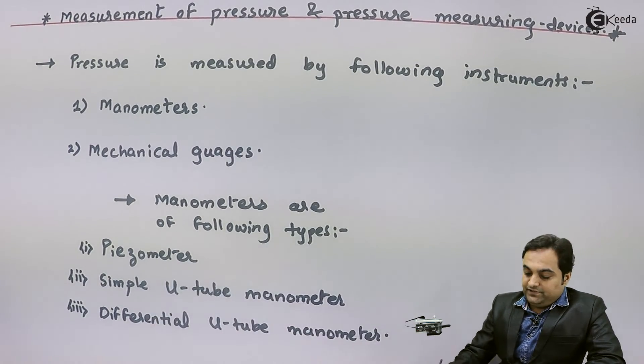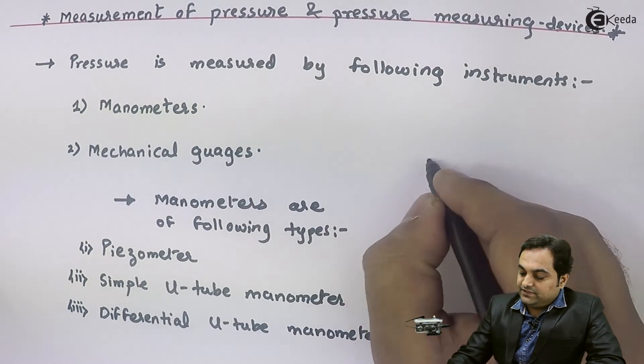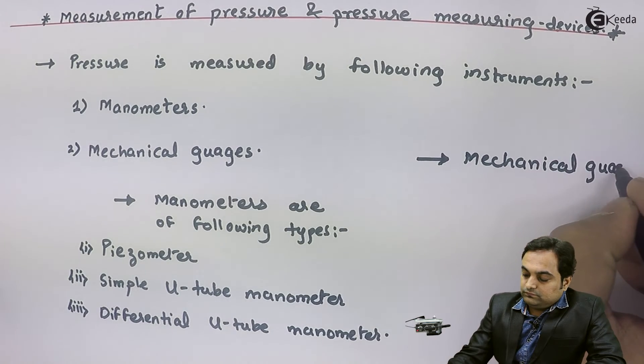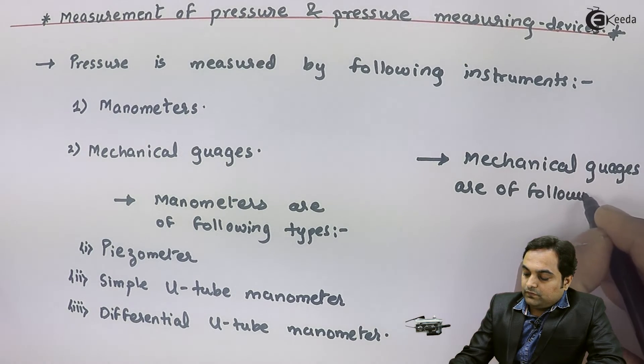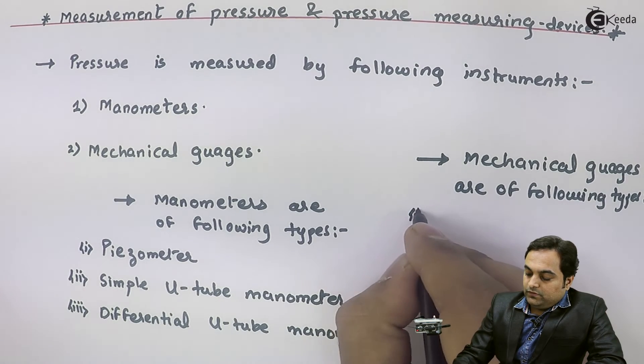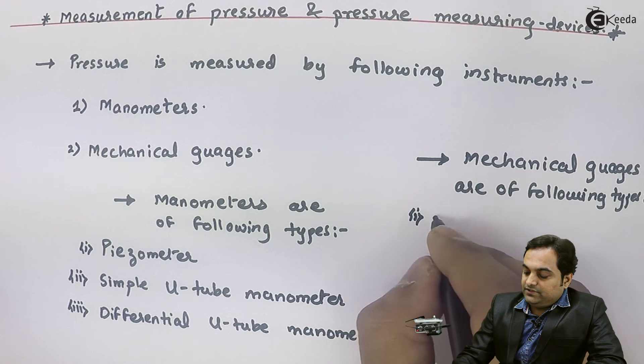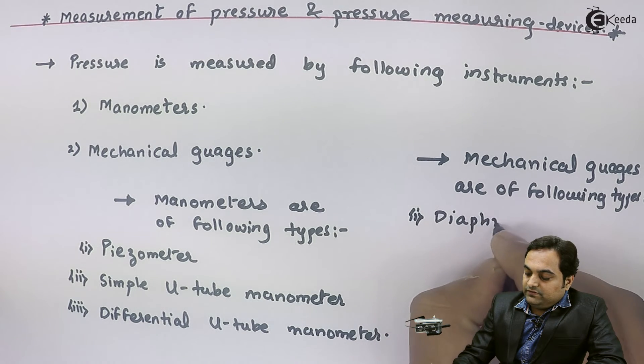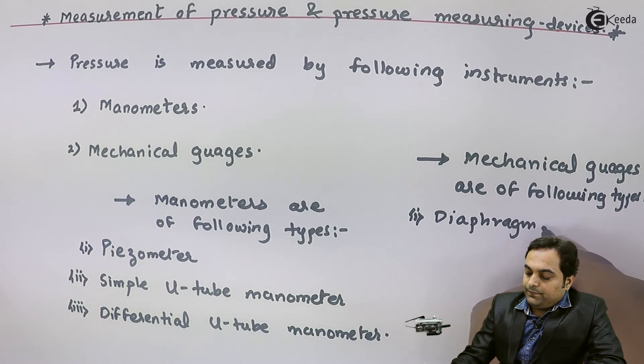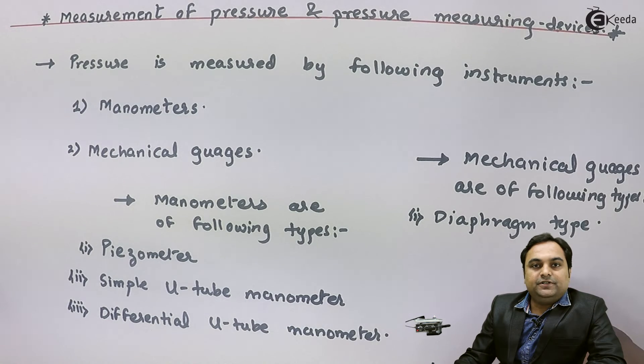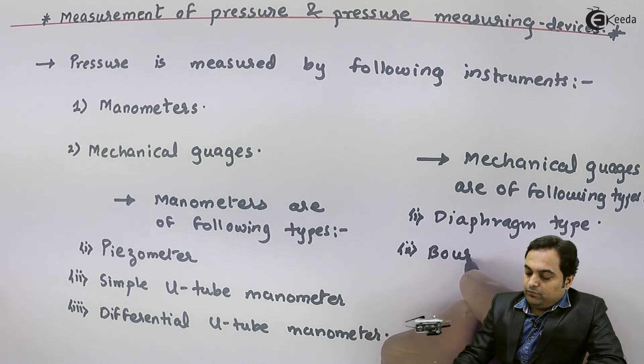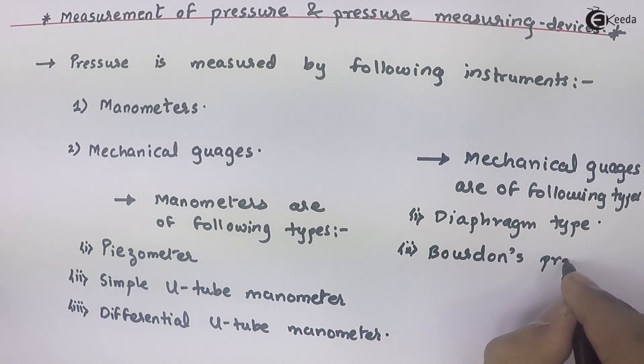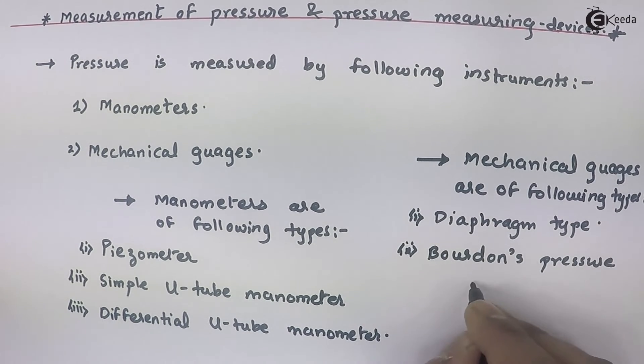Next, mechanical gauges are of following types. The first one is diaphragm type measuring instrument. Next is Bourdon's pressure gauge.